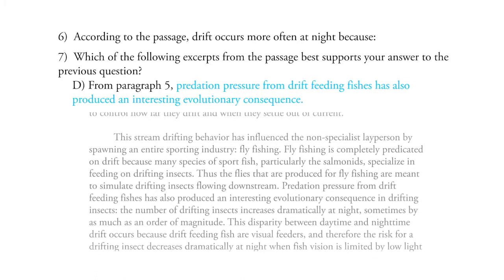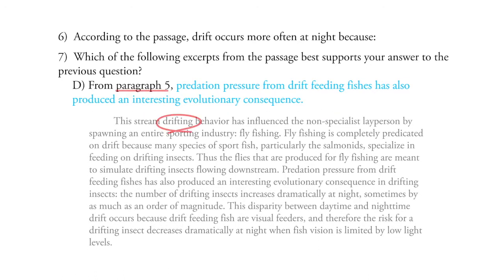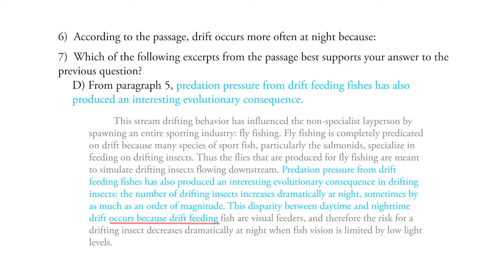Lastly, we have choice D, which is from paragraph 5, which is primarily about drifting and fly fishing. The excerpt reads: 'Predation pressure from drift-feeding fishes has also produced an interesting evolutionary consequence.' But if we keep reading — 'In drifting insects, the number of drifting insects increases dramatically at night, sometimes by as much as an order of magnitude. This disparity between daytime and nighttime drift occurs because drift-feeding fish are visual feeders. Therefore, the risk for drifting insects decreases dramatically at night when fish vision is limited by low light levels.'